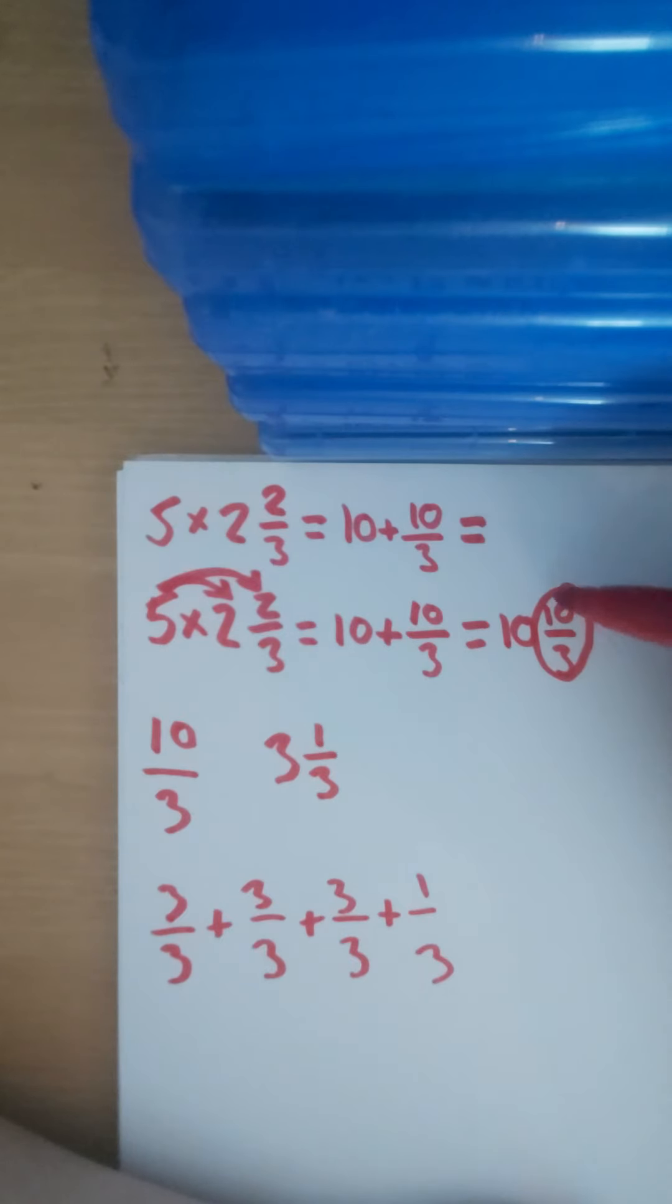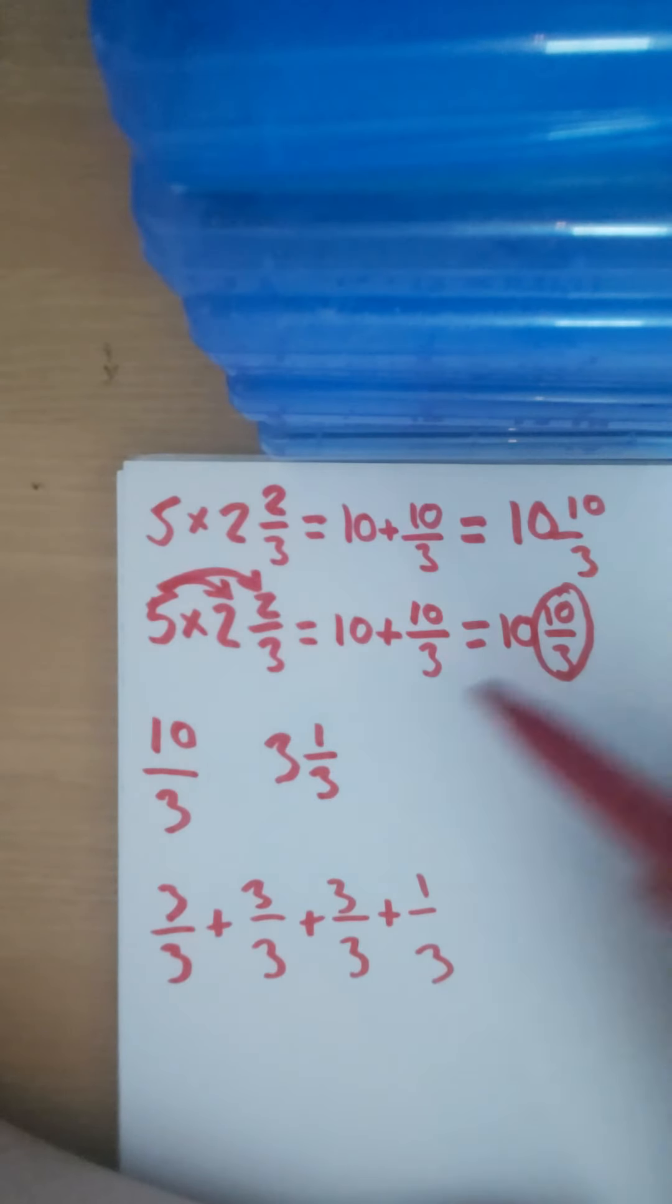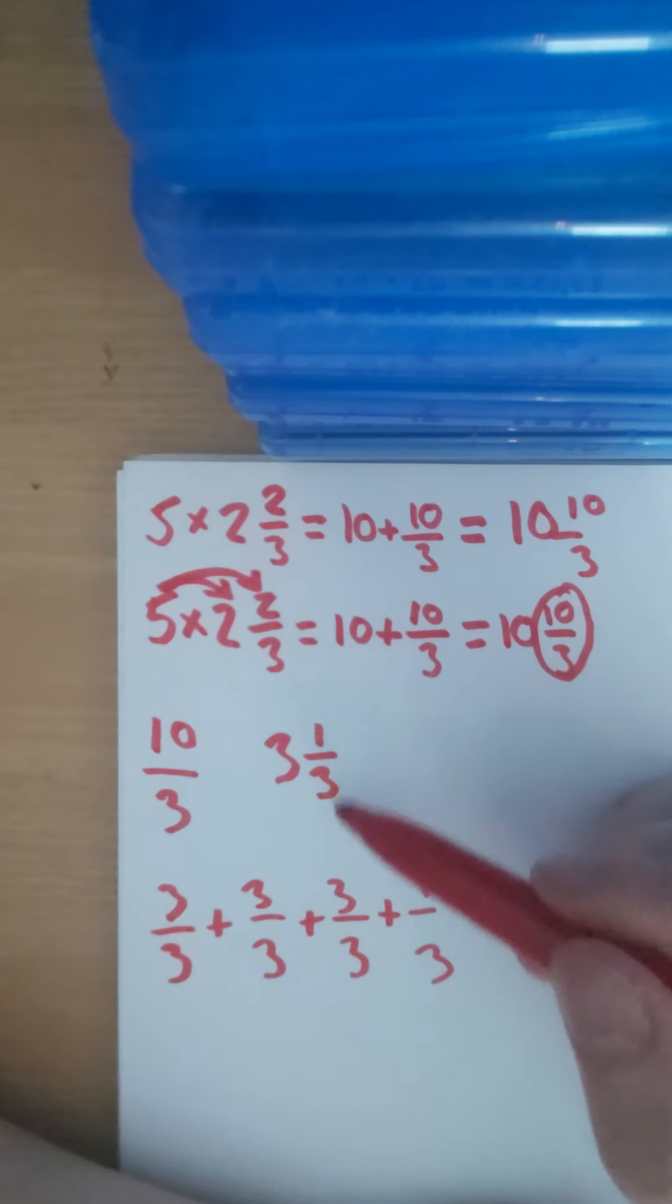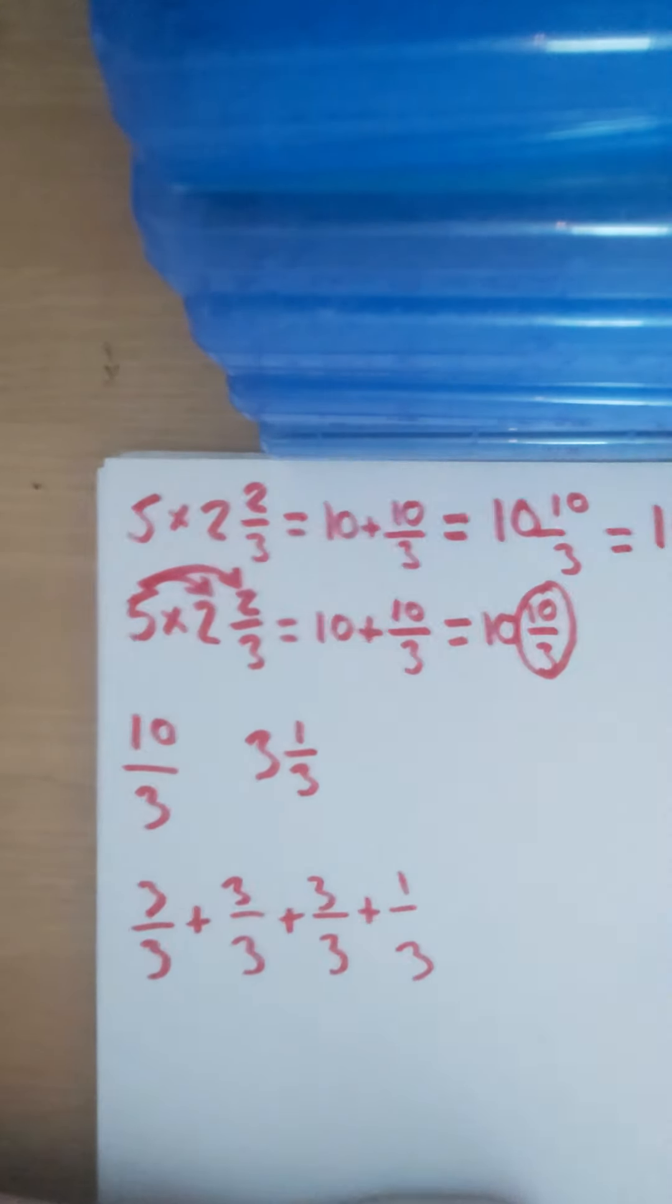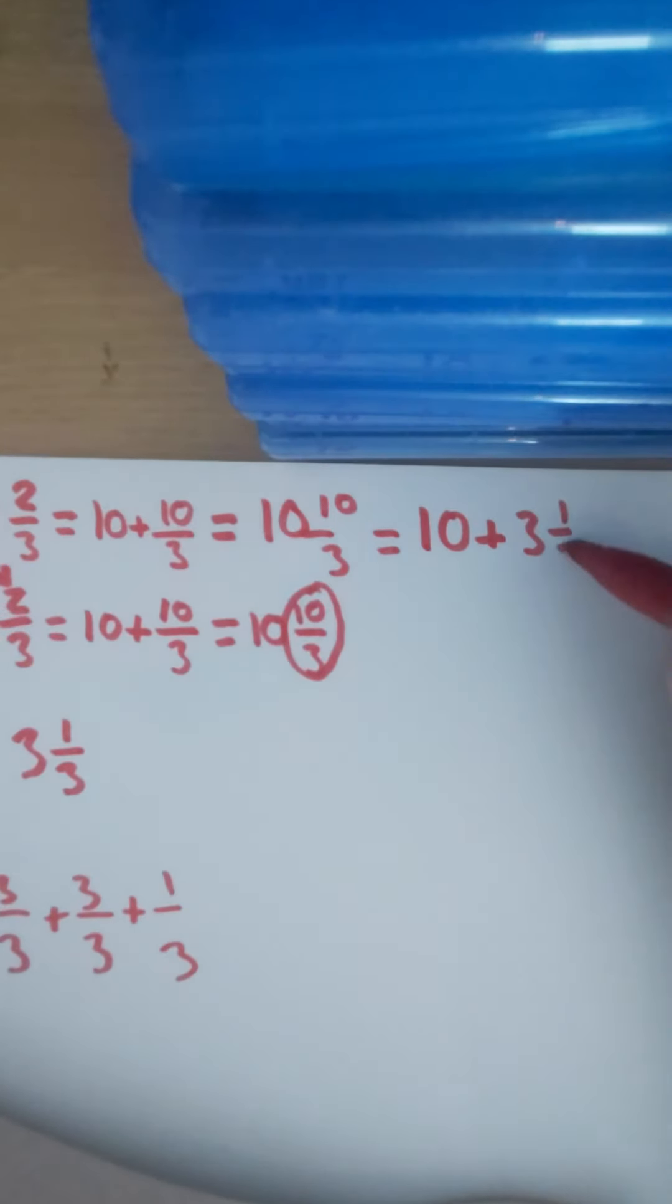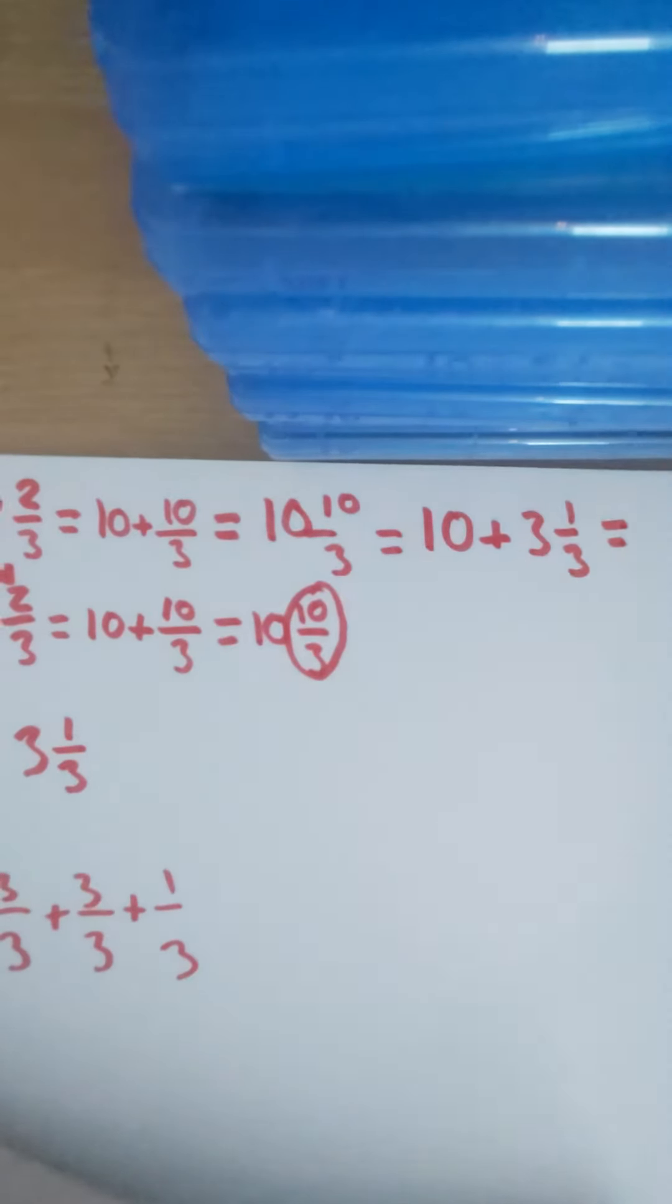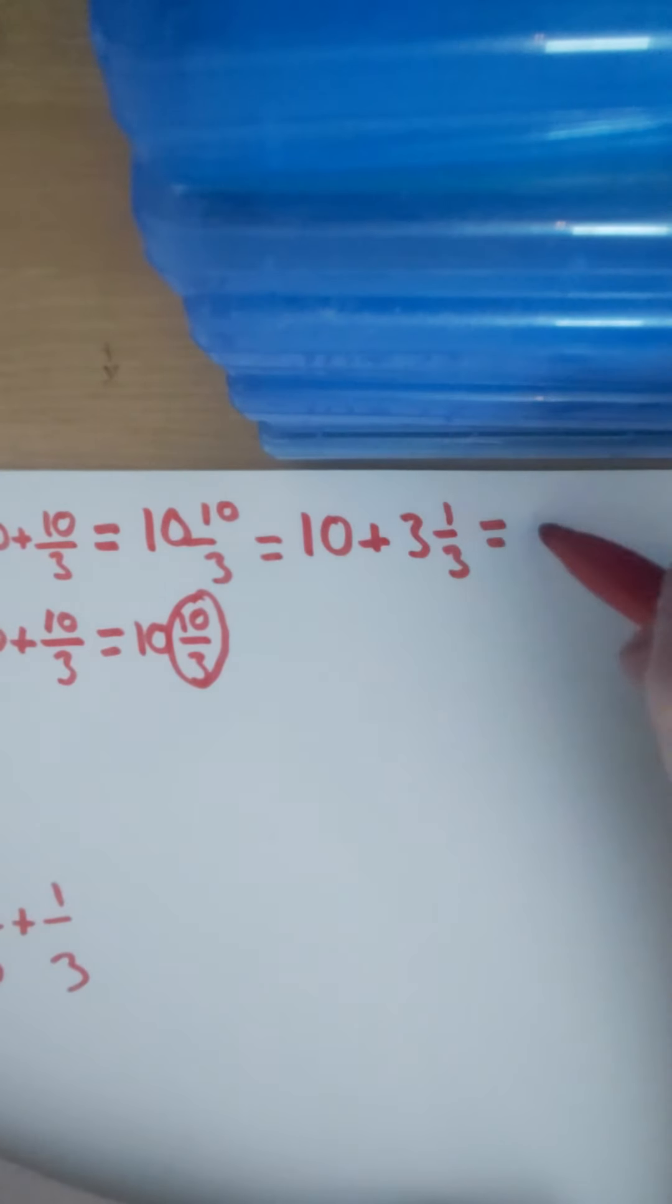Then all we do is, instead of saying 10 and 10/3, we are just going to add the 3 and 1/3 onto the 10. So we separated those two. It's 10 add 3 and 1/3, and then we add this together.